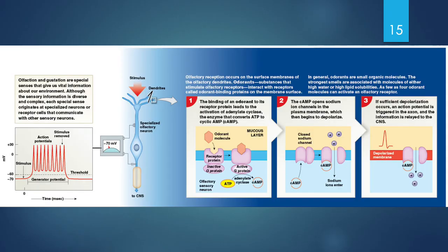At a closer chemical level, here's how the sense of smell works. An odorant molecule will bind with a receptor protein right next to an inactive G-protein. When the odorant molecule binds, that activates the G-protein, allowing ATP to be converted into cAMP. The active cAMP will open a sodium ion channel, sodium rushes in, and that creates a depolarization. If that depolarization is adequate to reach threshold, then an action potential will be triggered and that information is sent to the central nervous system.